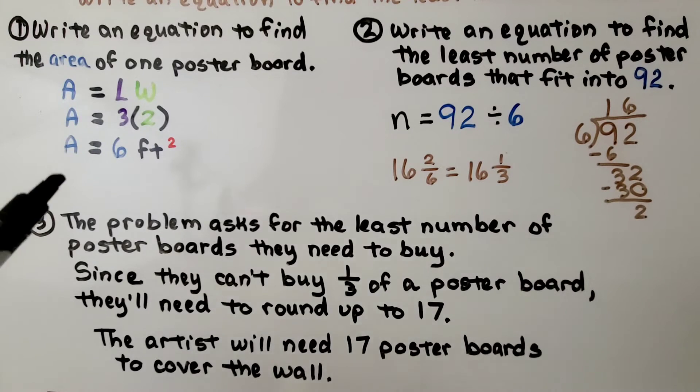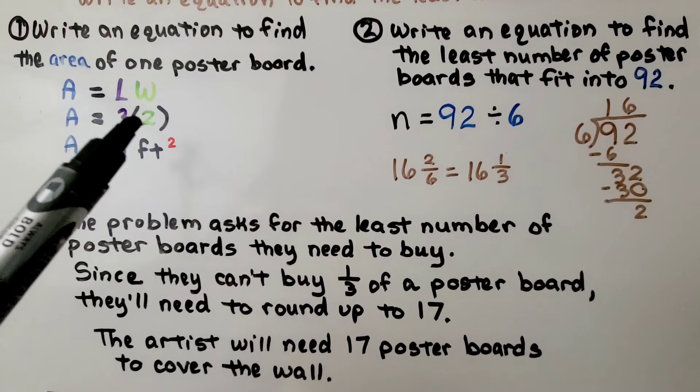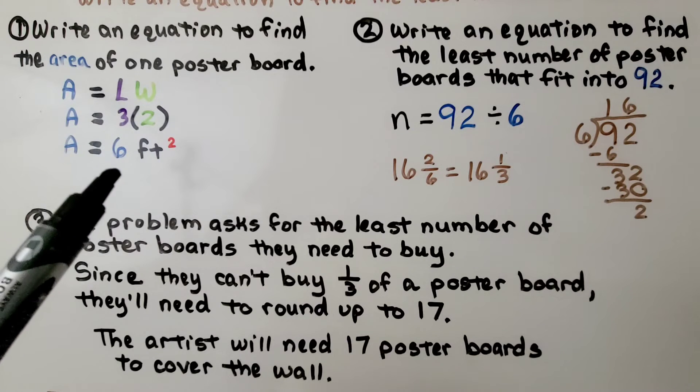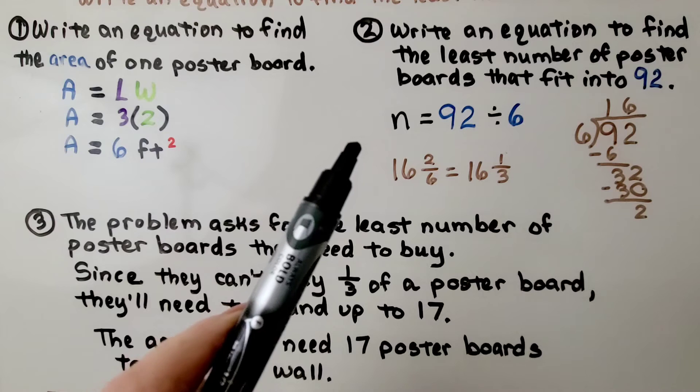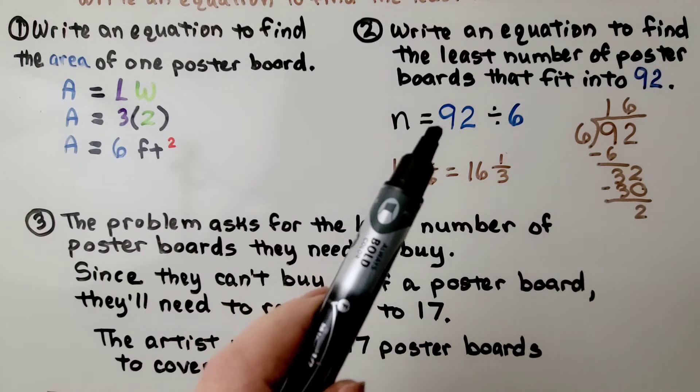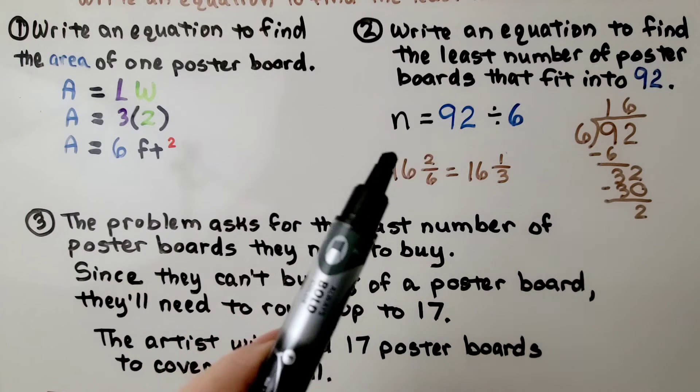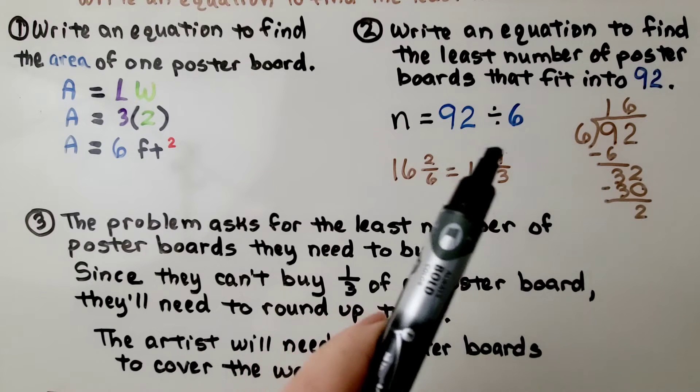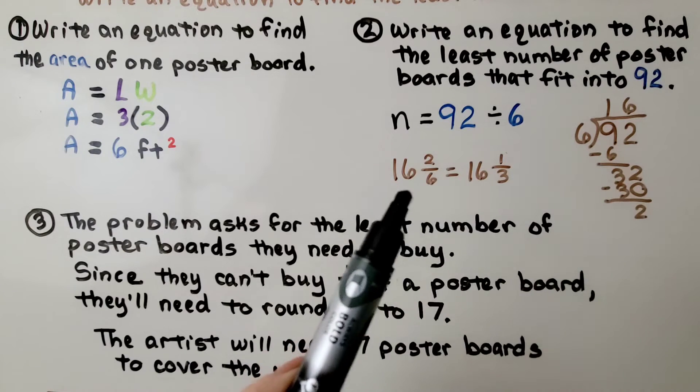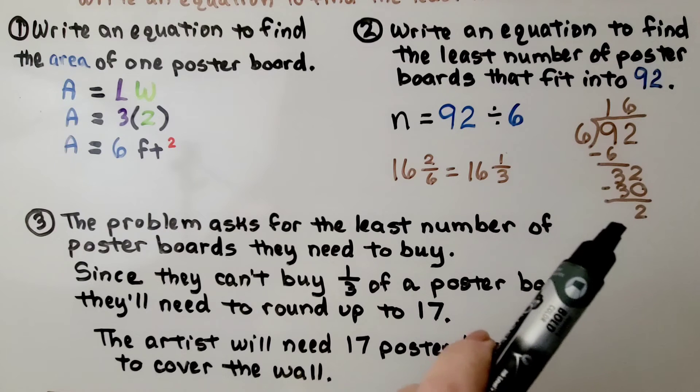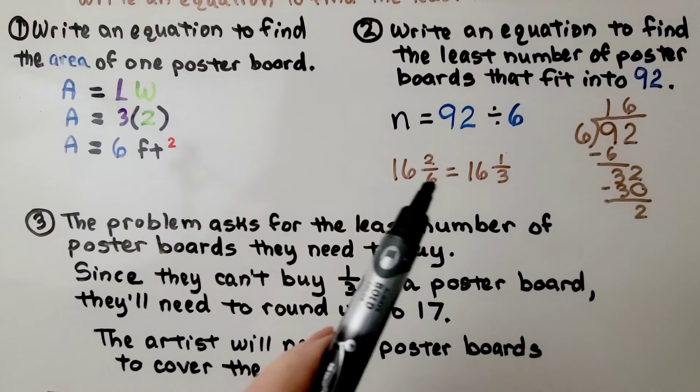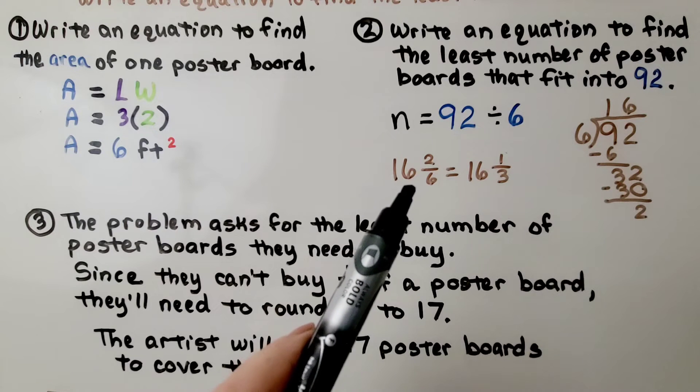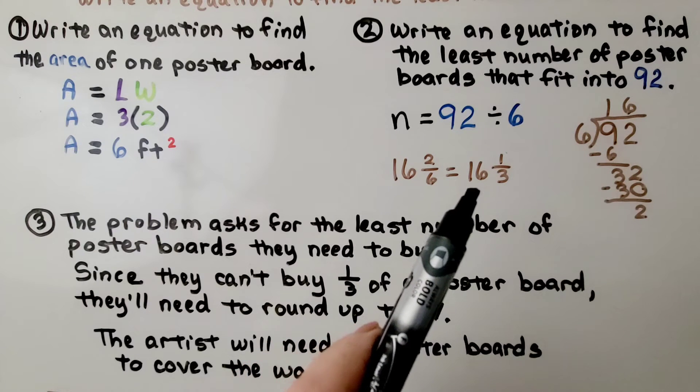So each poster board was 3 feet by 2 feet, so the area of each poster board is 6 square feet. We need to write an equation to find the least number of poster boards that will fit into the 92 square foot wall. We do 92 divided by 6. We get 16, and remember, this remainder will be a numerator, and that divisor will be the denominator. We get 16 and 2/6, which simplifies to 16 and 1/3.